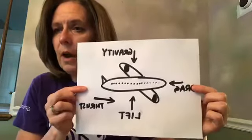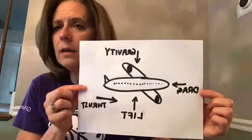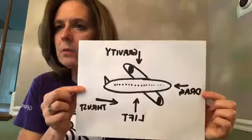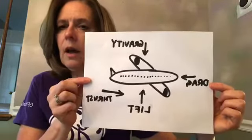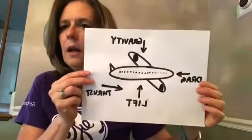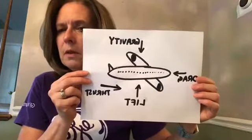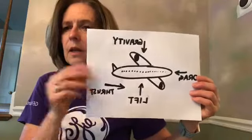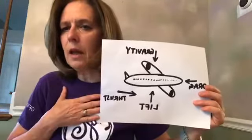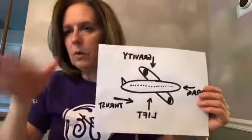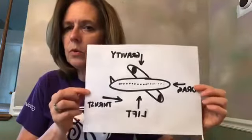The opposing force to thrust is drag, which you might also think of as wind resistance. Everybody has probably felt wind resistance — either when walking against the wind, or if you stick your hand out the car window. If you spread your arms out facing the wind you feel more resistance than if you stand sideways. That's why cars are shaped the way they are, why windshields slope, and why airplanes are streamlined — we're trying to reduce wind resistance as much as we can.